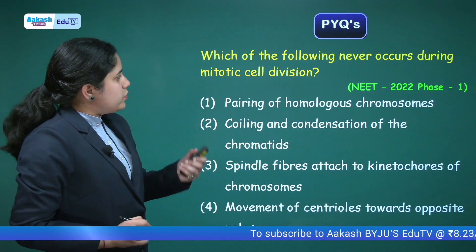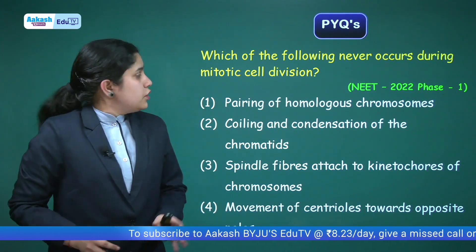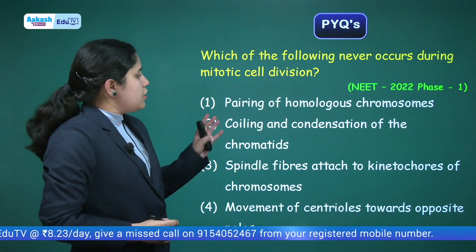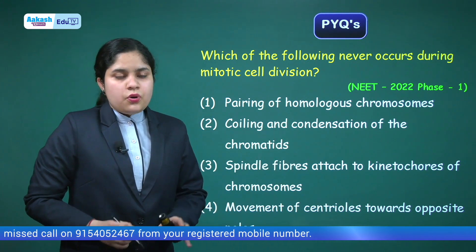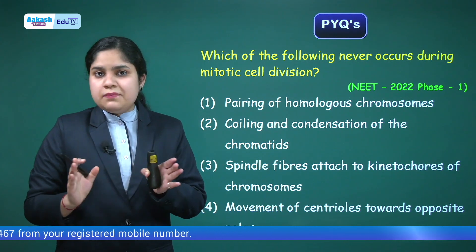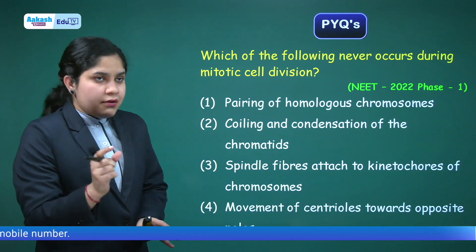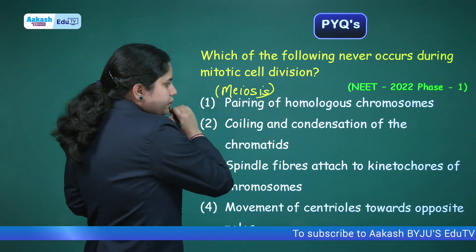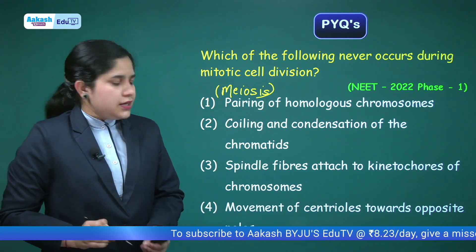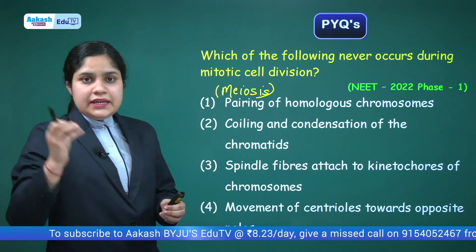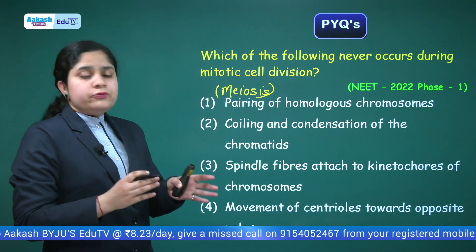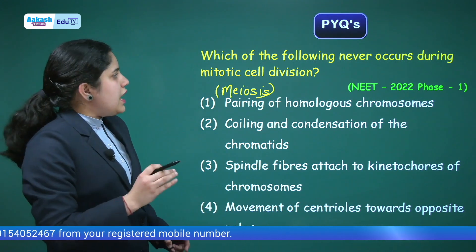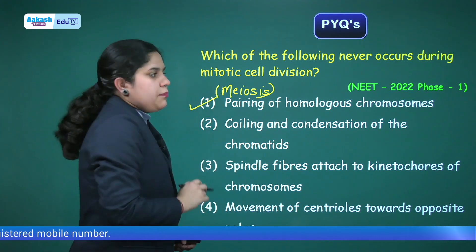Next question: which of the following never occurs during mitotic cell division? This is also a 2022 question. Option one: pairing of homologous chromosomes — we never discussed homologous chromosome pairing in mitosis; homologous chromosome pairing is seen in meiosis, which is another type of cell division. Option two: coiling and condensation of chromatids. Option three: spindle fibers attached to the kinetochores of chromosomes and movement of centrioles towards opposite poles. The remaining options two and three are correct, so the incorrect statement is option one.